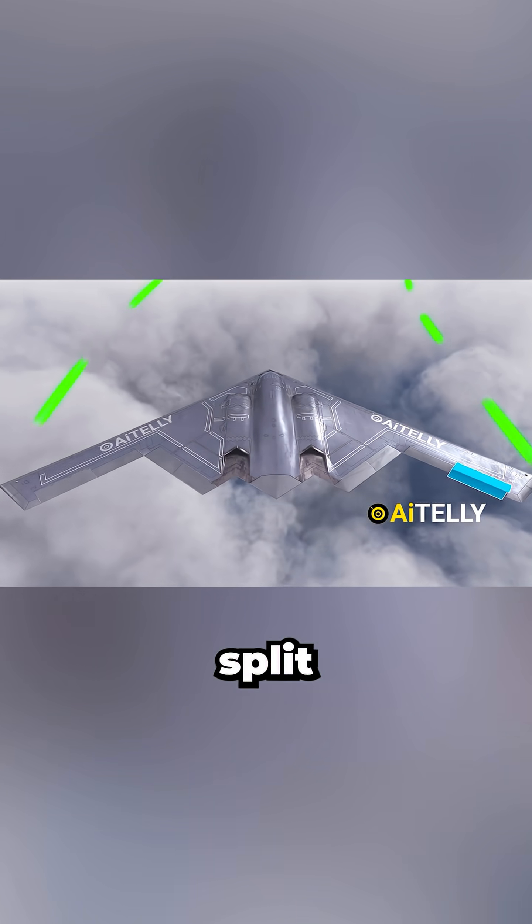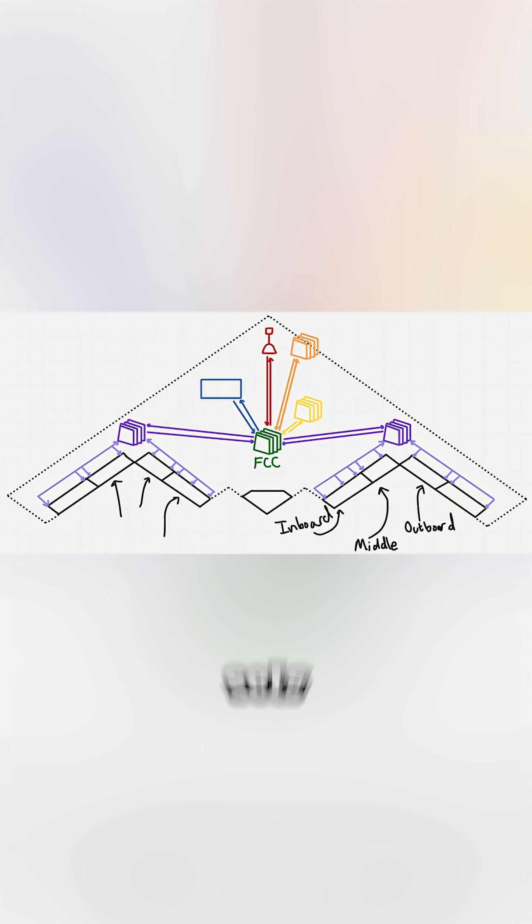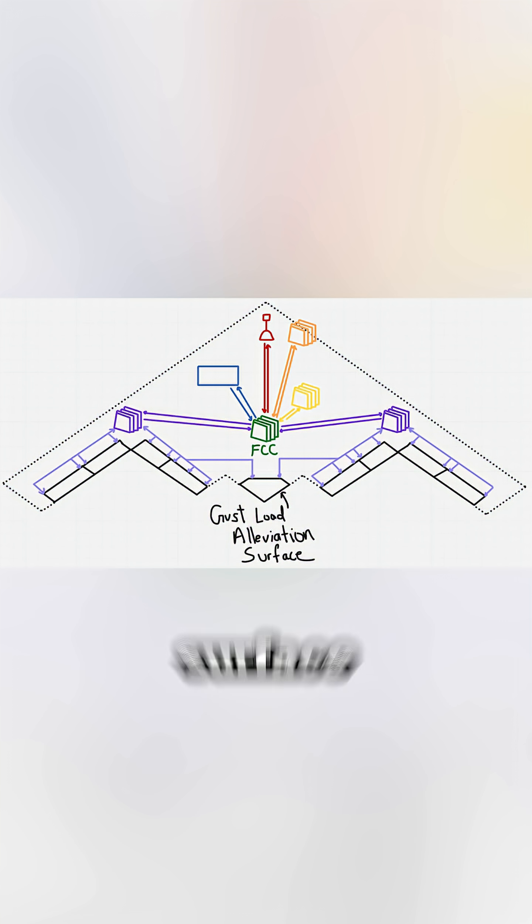Spread along the wings, you'll find split drag rudders for yaw control, three sets of elevons - outboard, middle, and inboard - for precise pitch and roll, and a clever hidden surface near the center line called the gust load alleviation surface.